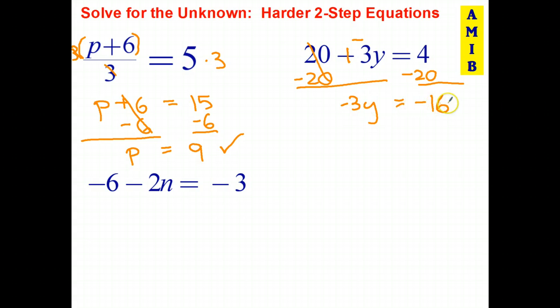And four subtract 20 is negative 16. Here's our second thing that's new. If I divide both sides by negative three, I don't get a nice whole number. Well, there's nothing wrong with that. Answers to equations can be fractions or decimals. So in this case, I just continue dividing both sides by negative three. Negative three divide negative three goes to one. And one times y is y.